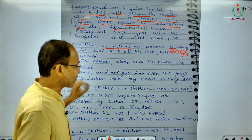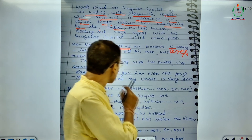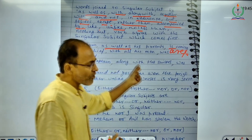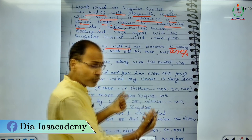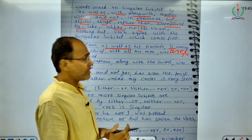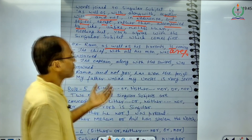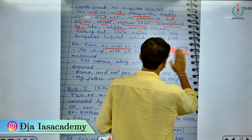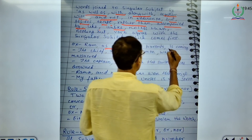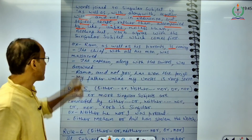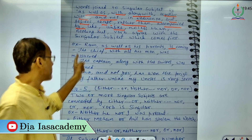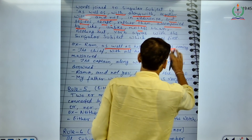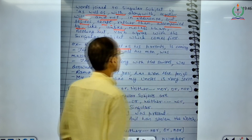When such sentences begin, the singular subject comes first. After that comes the joining word — here it is 'as well as' — followed by a subject that is either plural or of a different person. So 'Ram as well as his parents are coming' is wrong; the correct form is 'Ram as well as his parents is coming,' because the verb must agree with the singular subject Ram. Since Ram is singular, the verb is also singular.